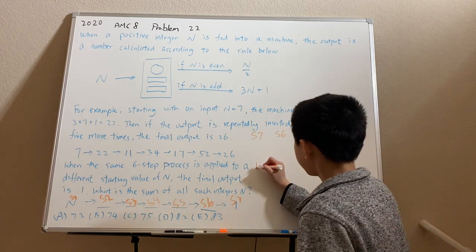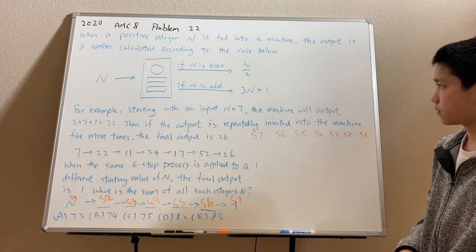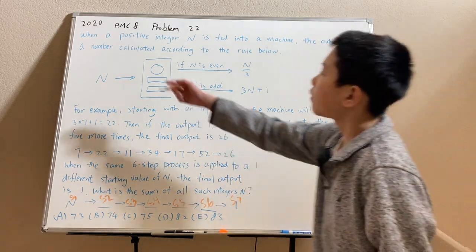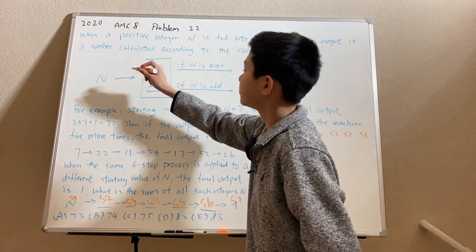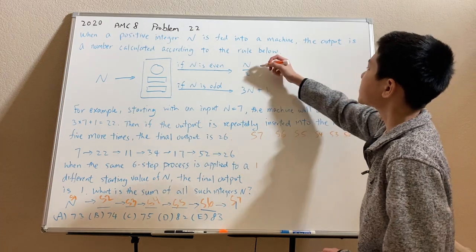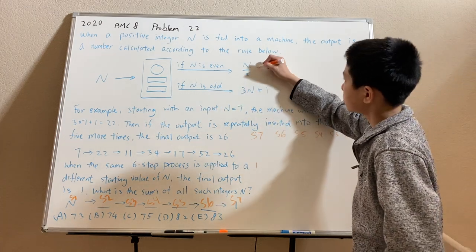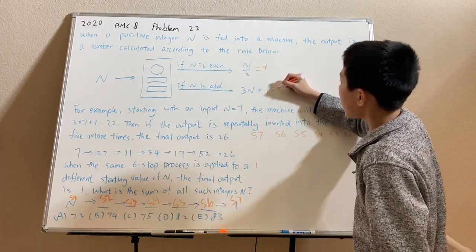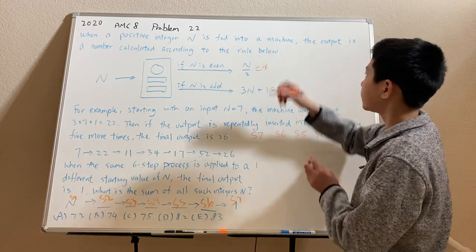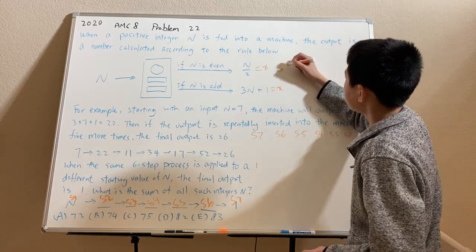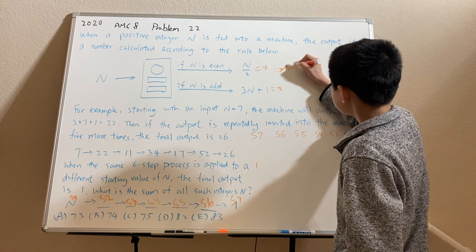And at stage 7, we have number 1. Now, when we input a number n into this machine and get output x, if n is even, then this will result in n being equal to 2x.